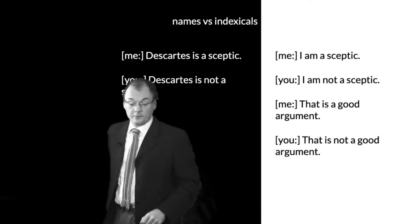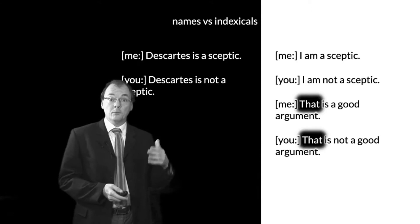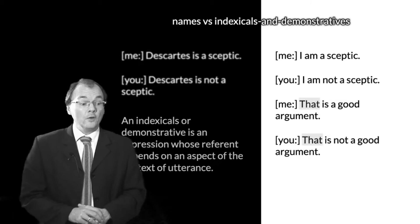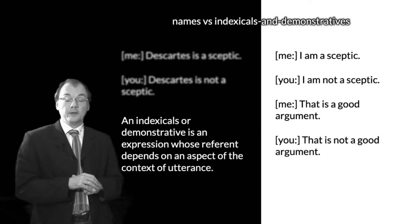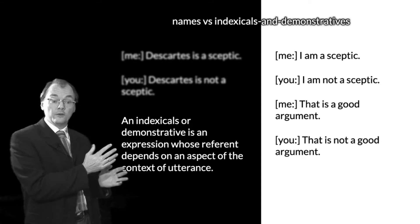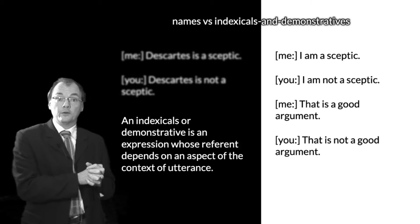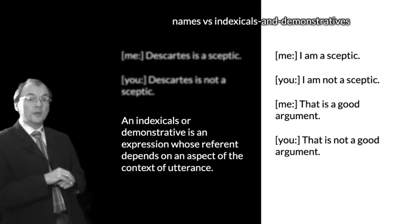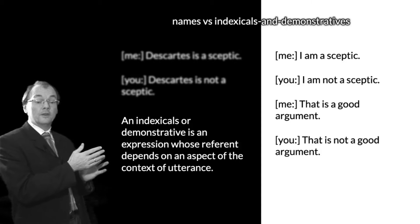These expressions — 'that,' 'here,' 'now' — are called demonstratives, as opposed to indexicals like 'I' and 'now.' An indexical or demonstrative is an expression whose referent depends on an aspect of the context of utterance. This is only a loose approximation, not a definition. I don't think it matters very much whether they're indexicals or demonstratives. The key feature is that the reference depends on context of utterance in some moderately systematic way.